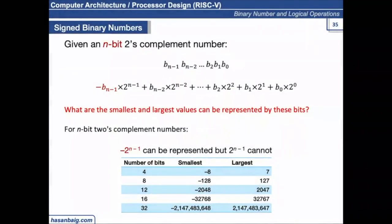So here you can see a number of 4-bits, minus 8 is the smallest value that you can represent and the largest value that you can represent is 7. Similarly, for 8-bits, it's minus 128, positive is 127, and so on. Any question? So that was the question that you were asking. What value you can represent?